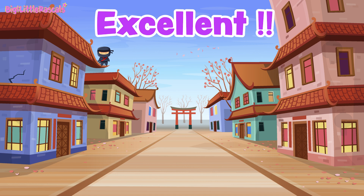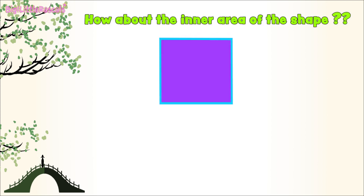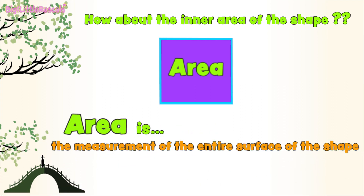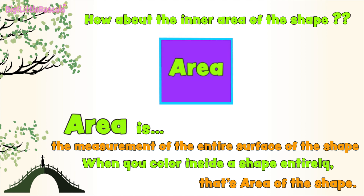Excellent work, everyone! Now we have more understanding about the perimeter of some shapes. Shall we go deeper? Let's begin! We have learned about perimeter — the total length of a shape's outline. Now, how about the inner area of a shape? Area is the measurement of the entire surface of the shape. When you color inside a shape entirely, that's the area of the shape. In this square shape, we color it with purple, and that's the area of the square shape.